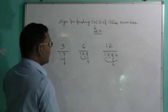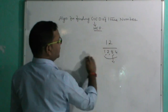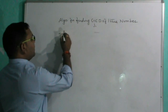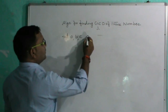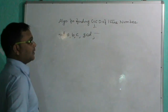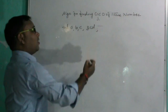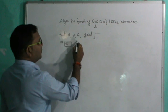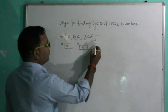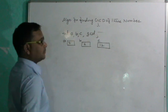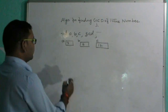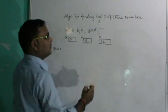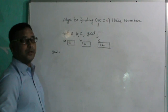Now, how do we design the algorithm? We have variables a, b, c, and GCD, where we store the output in the GCD variable. Assume a = 3, b = 6, and c = 12. Before finding GCD, we need to find the largest number among the three, which we can find using the conditional operator.